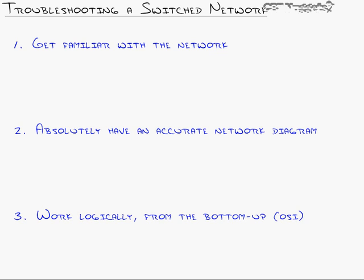When troubleshooting a switch network, the number one thing that can help you is to be familiar with that network — and you can partner that with number two: absolutely have an accurate network diagram. Those two things combined will give you 90% of your troubleshooting. The network diagram we've been using in this series has evolved — it's a living diagram. As we add trunks, we show lines and label them. As we add VLANs, we show what ports are in them. We show WAN links and IP addresses. In a Cisco admin's life, the network diagram is the lifeline of the network. If you let that go, troubleshooting becomes a nightmare.